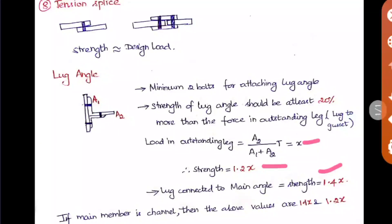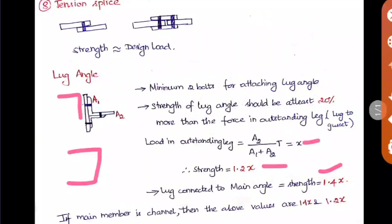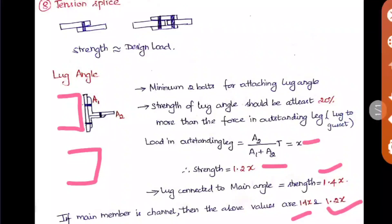When the main member is a channel — a channel shape — connecting to it, the first value should be 1.1x, that is a 10% increase, and the lug connected to the main angle strength should be equal to 1.2x, a 20% increase. These values are important. That is all about the lug angle.